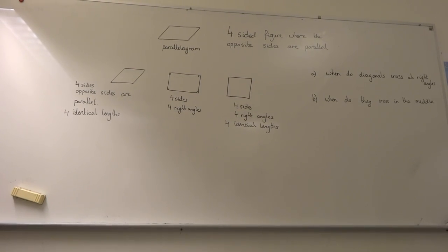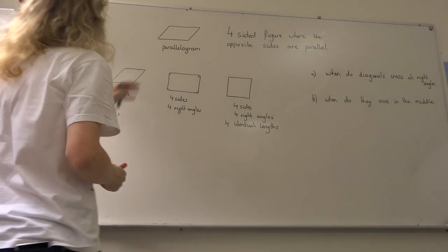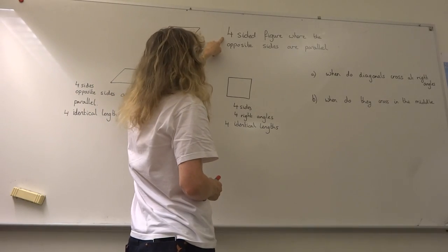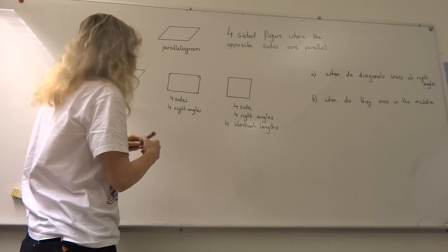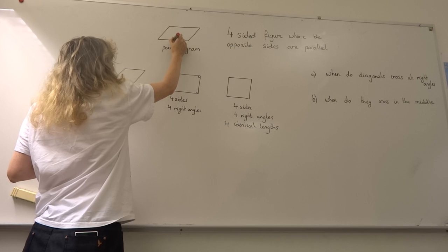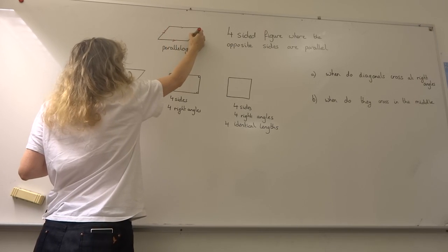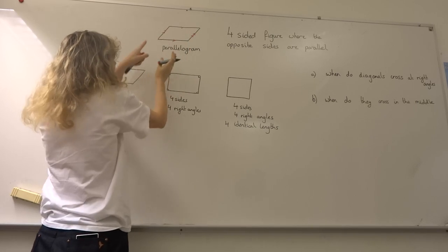Okay, now we are talking about parallelograms. A parallelogram is any four-sided figure where the opposite sides are parallel, and we usually indicate that they're parallel like this—these two lines are parallel and these two lines are parallel.